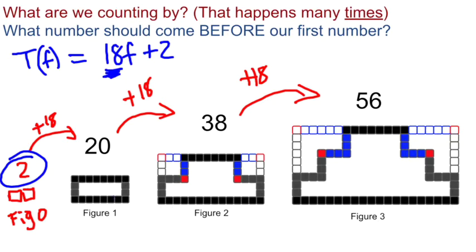For figure number one, F is one. 18 times one plus two is 20. For figure number two, F is two. 18 times two is 36 plus two is 38. All right, and on down the line.